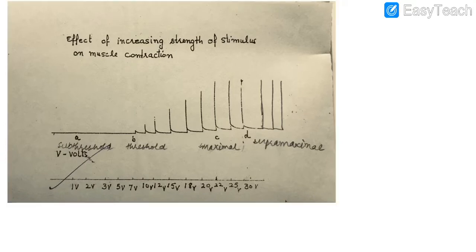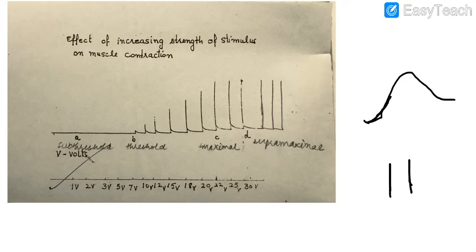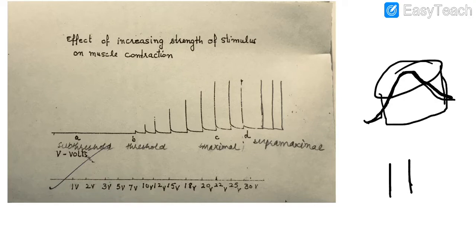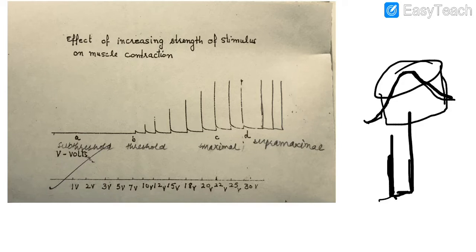Why are we not getting the simple muscle twitch like in the previous experiment, where we were getting the simple muscle twitch? Over here we are just getting a single line. The reason is: don't get confused — that contraction and relaxation phase we were getting because our drum was moving at 640 millimeters per second. In this experiment the drum is stationary. So we provide the stimulus, the marker-lever will move upward and come downward, then we move the drum manually a bit further so that the point of contact comes overhead, then we provide the second stimulus and get the response as a straight line.